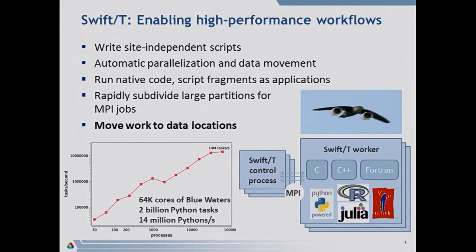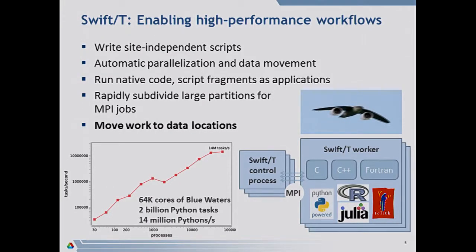We wanted to be able to run not just external apps. Mike talked about command line as the main way Swift K interacts with your application. For Swift T, the main way to interact with the application is by linking against it. When you package an application for Swift T, you typically build either a shared library or a static library and tell Swift how to run it. Or you can run a script fragment — we have plug-ins for Python, R, Julia, and Tcl, in addition to native code like C, C++, and Fortran. This is a great way to run, for example, 14 million Pythons per second on Blue Waters. We've also done Python on the queue, and our examples will show you how to do that.